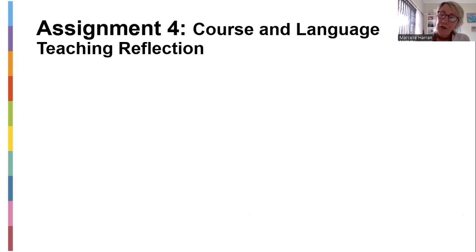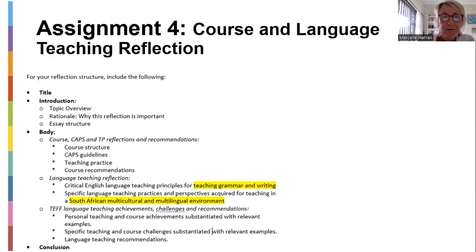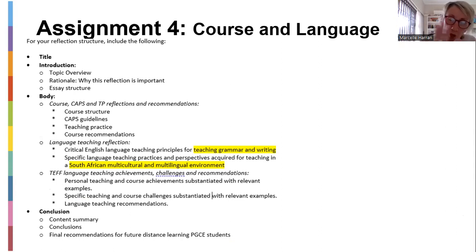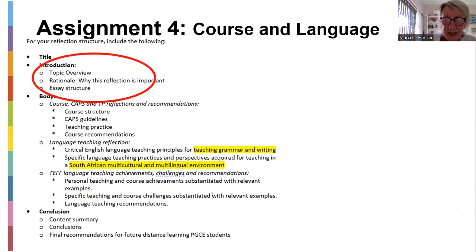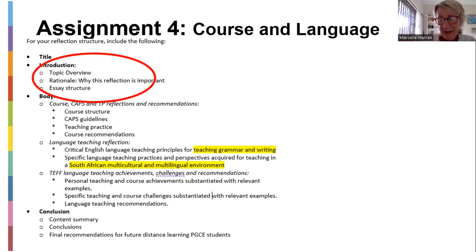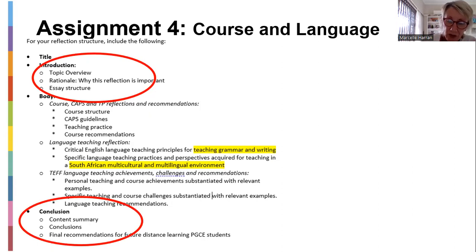So assignment four overview quickly — it's a course and language teaching reflection for the semester. This is the structure: first you've got an introduction with a topic overview, rationale and essay structure. Then you've got the body with three sections. Then the conclusion at the end, which is the content summary, the conclusion itself, and the final recommendation for future PGCE students.